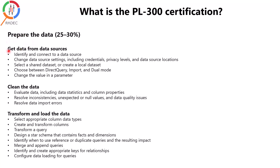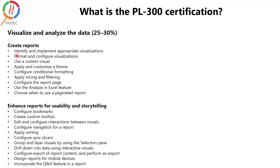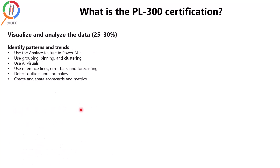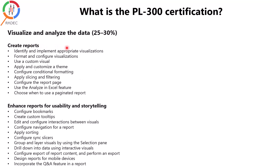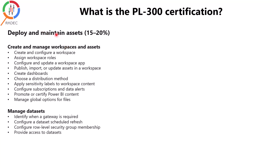The same methodology is followed for all learning paths. The second learning path, Model the Data, has three sections with their respective topics. For the third learning path, Visualize and Analyze the Data, the sections are Create Reports, Enhance Reports for Usability and Storytelling, and Identify Patterns and Trends. The last learning path, Deploy and Maintain Assets, has two sections: Create and Manage Workspaces and Assets, and Manage Data Sets, each with multiple topics.